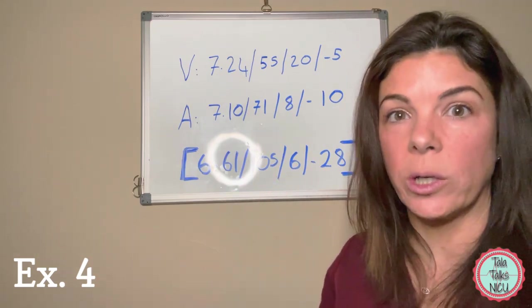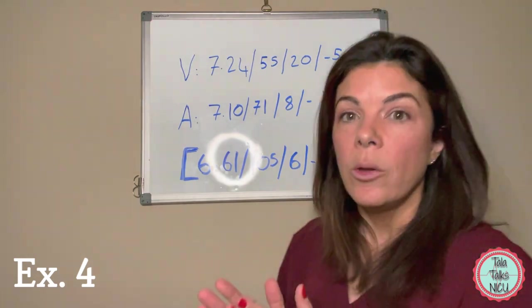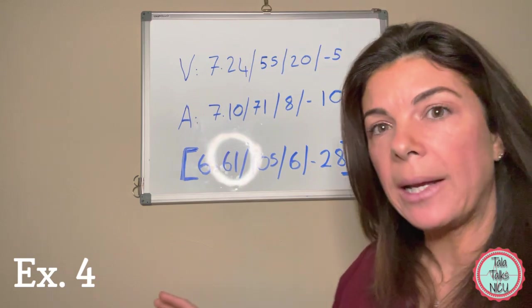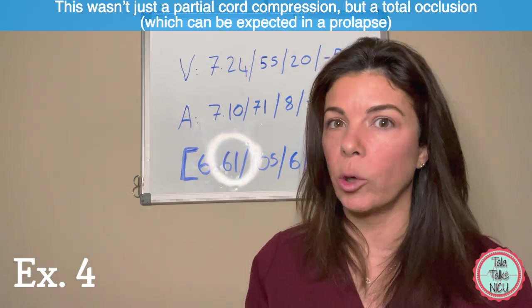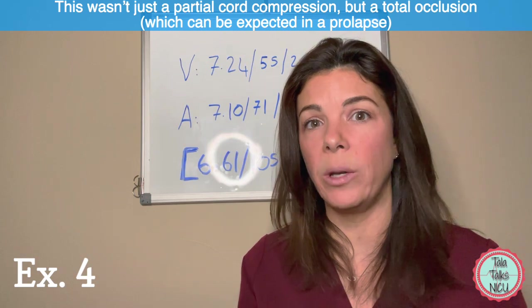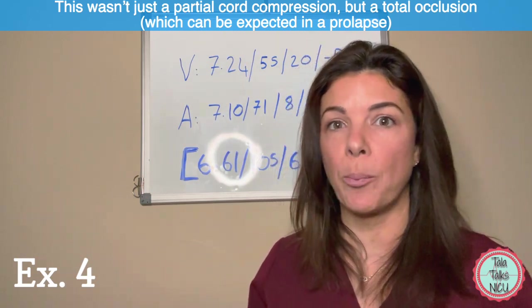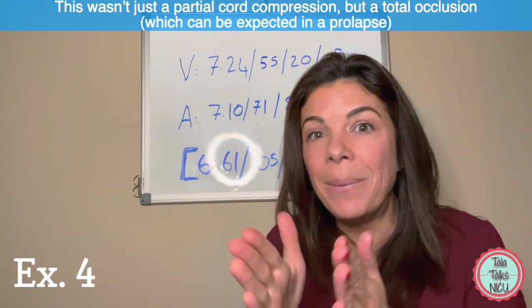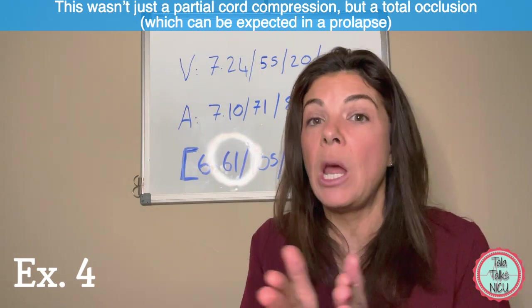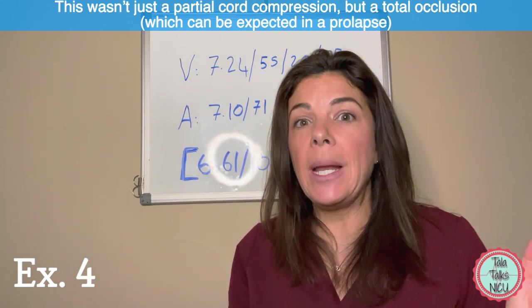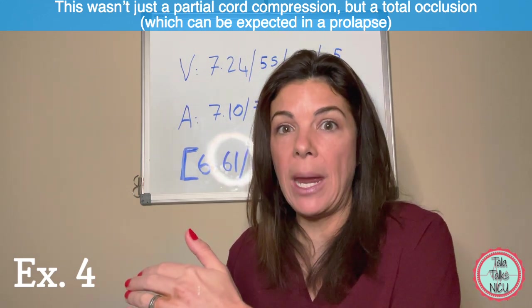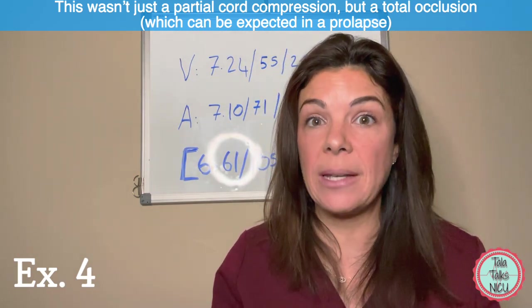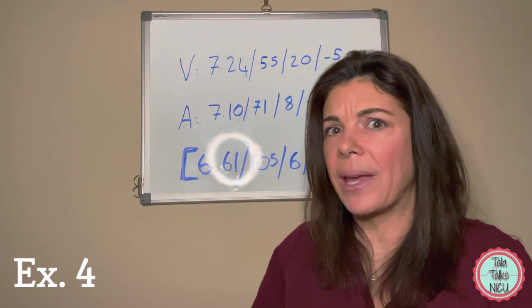Here we would look at these cord gases and say, okay, there was probably some level of cord compression, but still that doesn't explain why the baby's first gas was so atrocious and why we were unable to resuscitate the baby. What can we say probably happened here? Most likely there wasn't just a partial cord compression but total occlusion of the cord, and that can be expected in a prolapse where it wasn't just the vein but also the artery ended up getting completely compressed and squeezed.